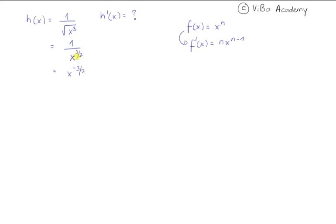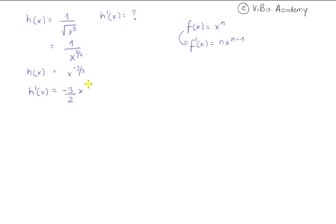Now I've expressed my function as a single power of x, so I can go ahead and apply the power rule. So h prime of x, according to the power rule, is the existing power negative 3 over 2 pulled down, and then x raised to negative 3 over 2 minus 1, which gives negative 3 over 2 times x raised to negative 5 over 2.